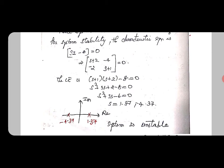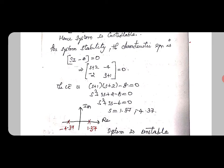1.37 lies in the right-hand side of the s-plane and -4.37 lies in the left-hand side of the s-plane. We know very well that whatever poles lie to the right-hand side of the s-plane, that is RHP pole, is said to be an unstable system. Even when a single pole lies in the RH plane, then the system is completely unstable.